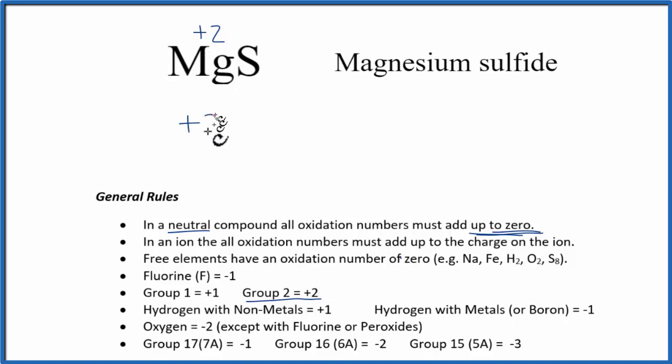Magnesium is plus two, plus sulfur, we're going to call that X, we don't know, and everything has to equal zero. So X would equal minus two, and that's it.